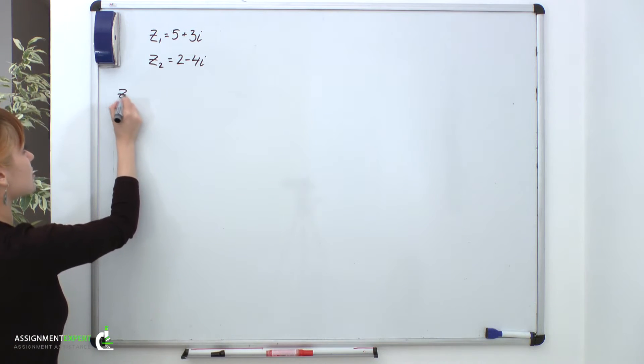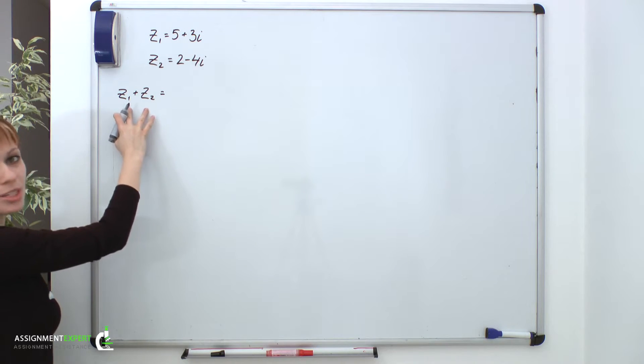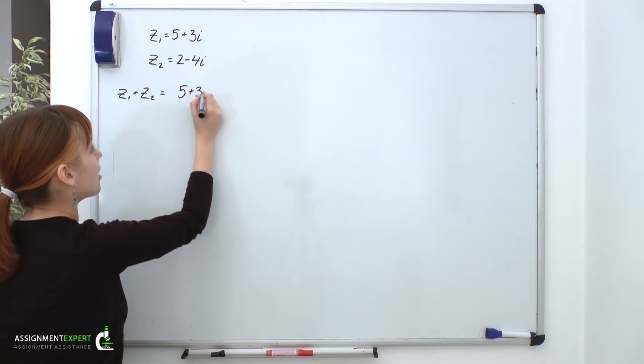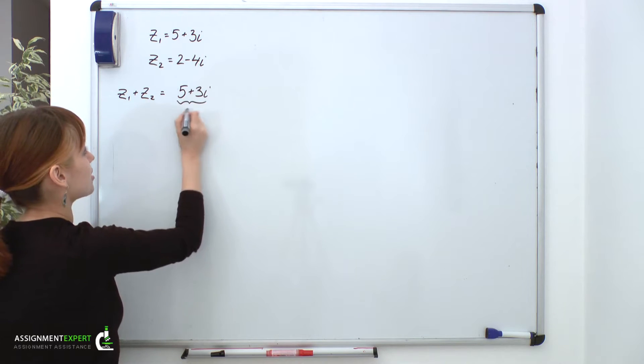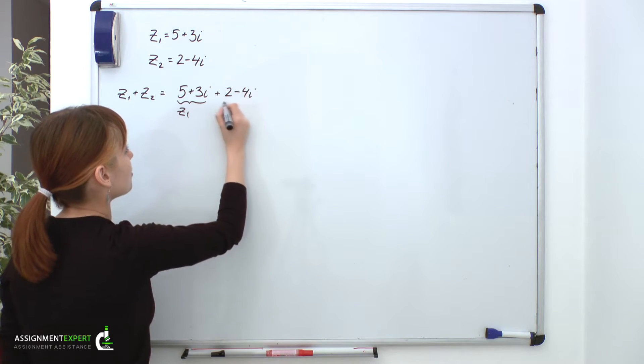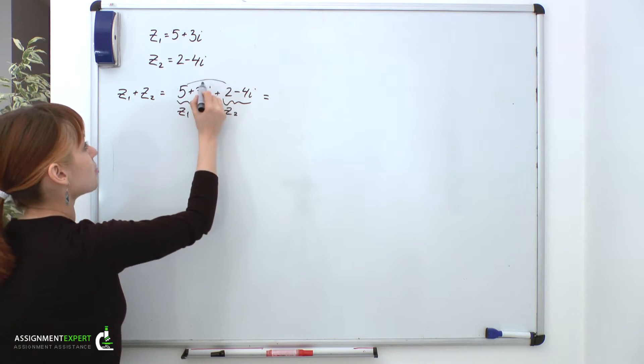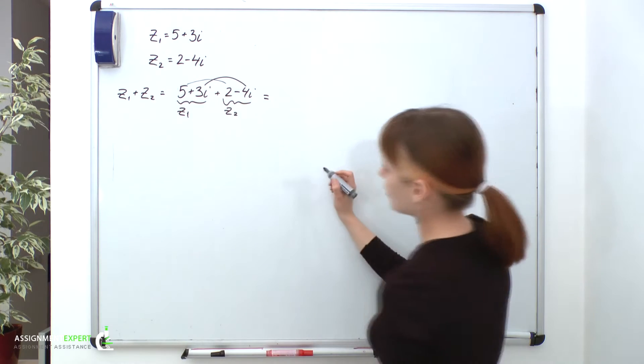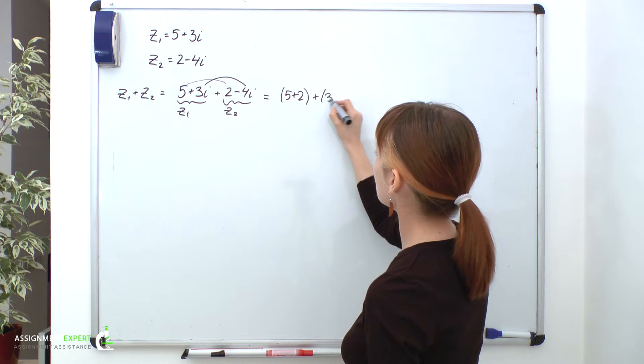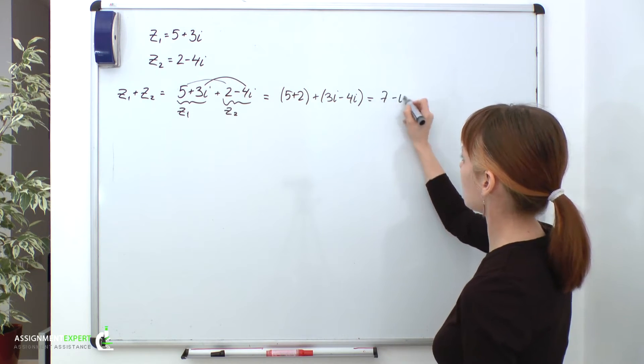So, we'll go Z1 plus Z2, and now we'll treat these two numbers as dual-termed expressions. So, we'll have 5 plus 3i, which is our Z1, plus 2 minus 4i, which is our Z2. And now we'll group real and imaginary numbers to have 5 plus 2 plus 3i minus 4i, which equals 7 minus i.